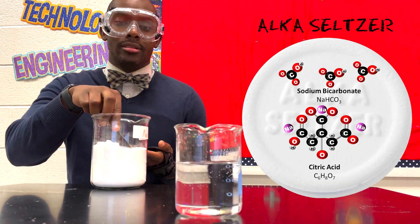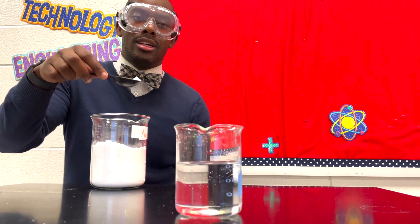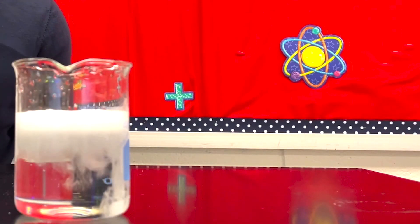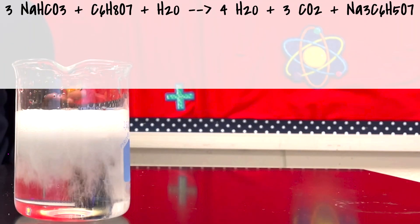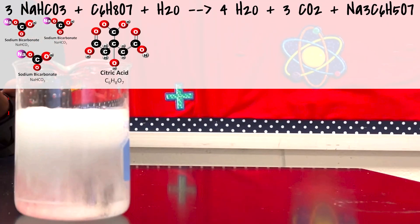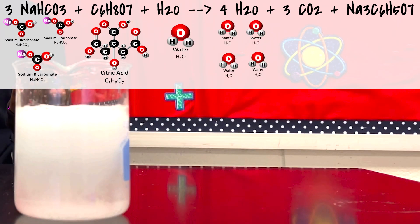I have crushed up Alka-Seltzer and water. When Alka-Seltzer, which is just sodium bicarbonate and citric acid, is added to water, that reaction involves three molecules of sodium bicarbonate, one molecule of citric acid, and one water molecule to produce four molecules of water.